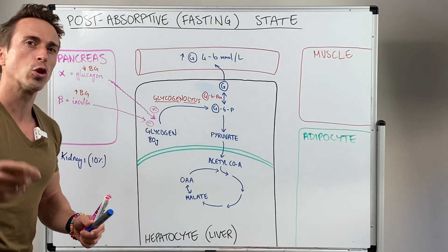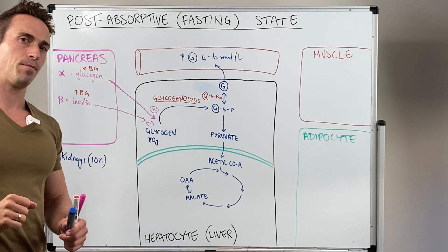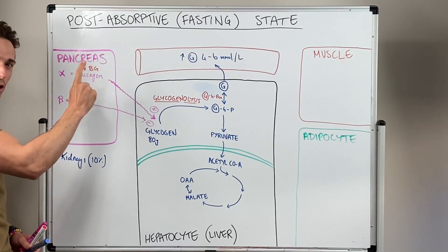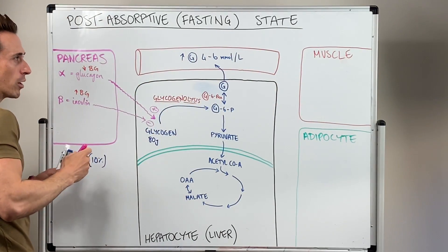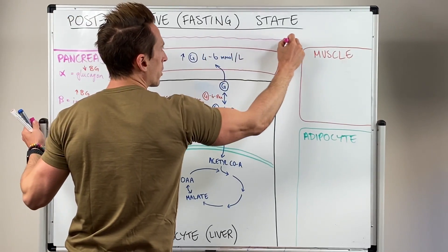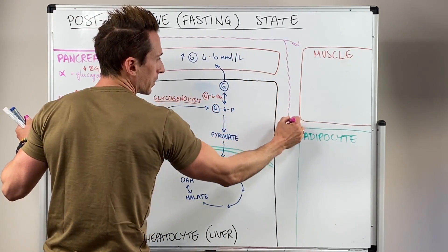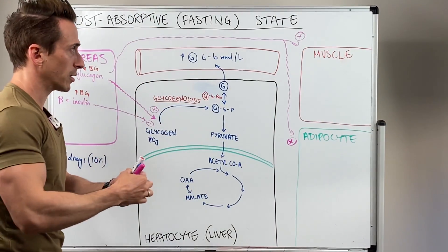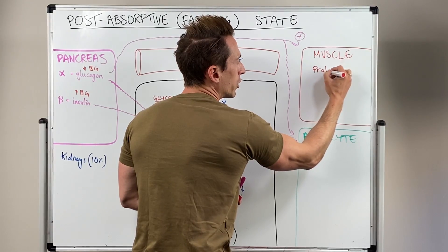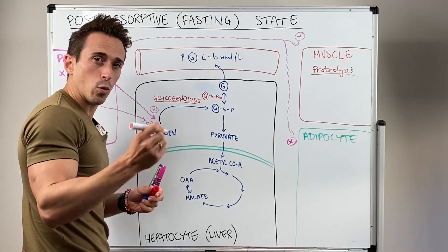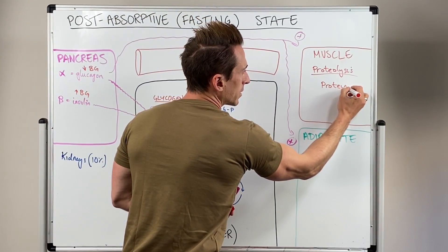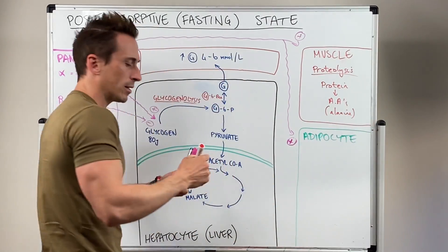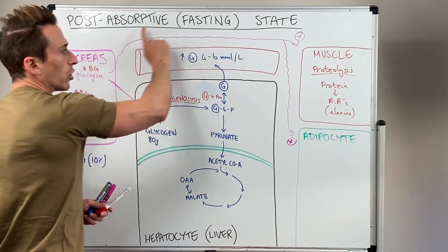This is where another process comes into play called gluconeogenesis. Once I've used up my glycogen, blood glucose levels start to drop again, glucagon is stimulated, and insulin is inhibited. Glucagon is high and it can travel to distant tissues — via the bloodstream to the muscle and to fat — and it's a positive regulator of two important processes. The first is proteolysis in muscle, which takes protein and breaks it down into amino acids. One really important amino acid in this process is alanine, along with other gluconeogenic amino acids.